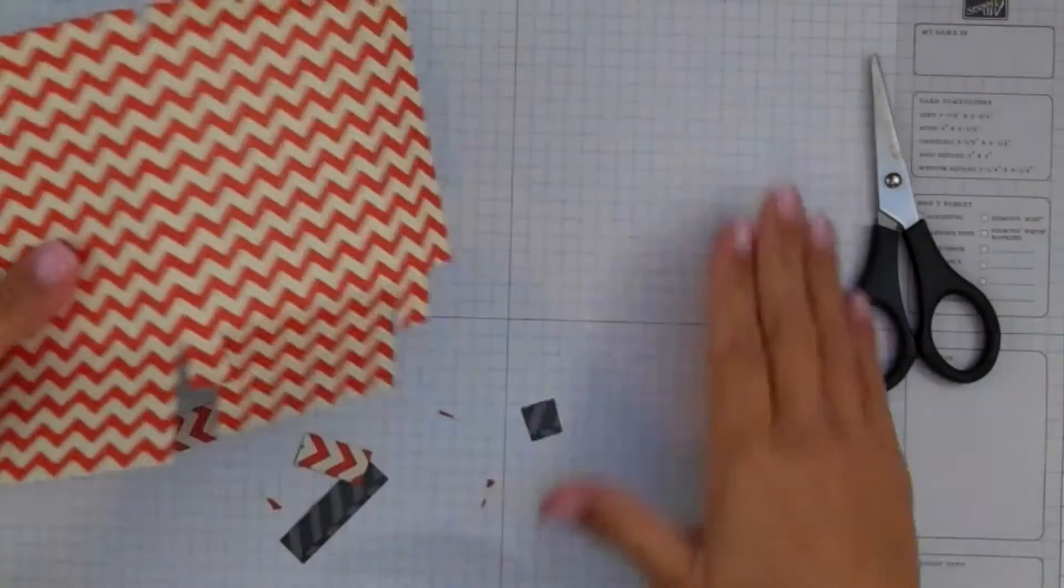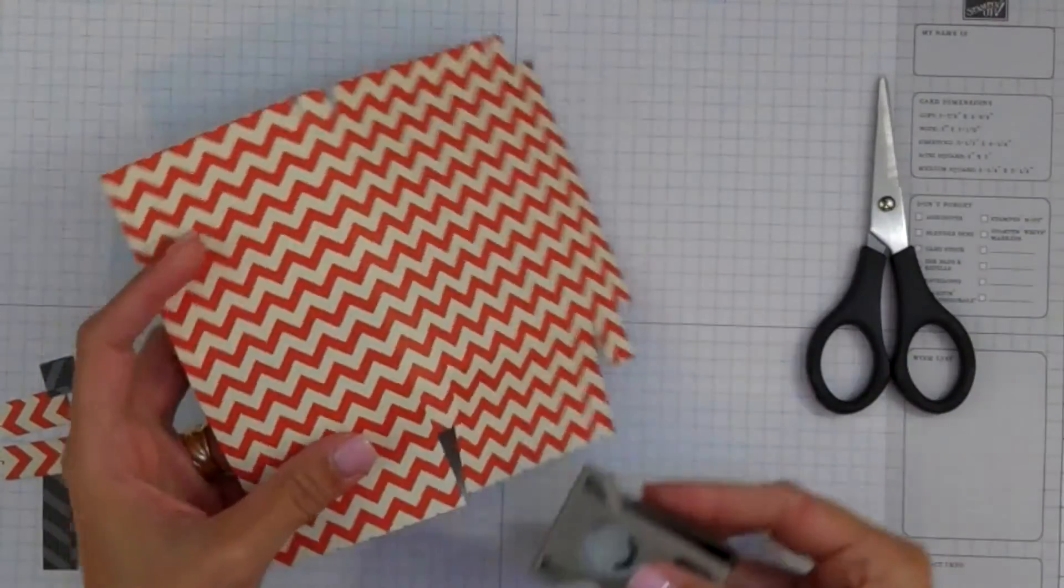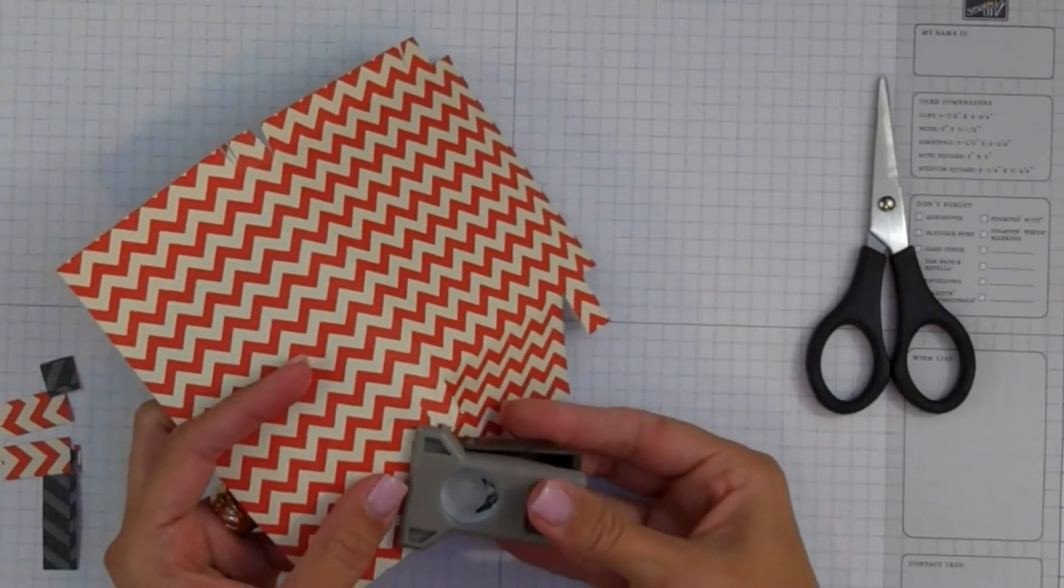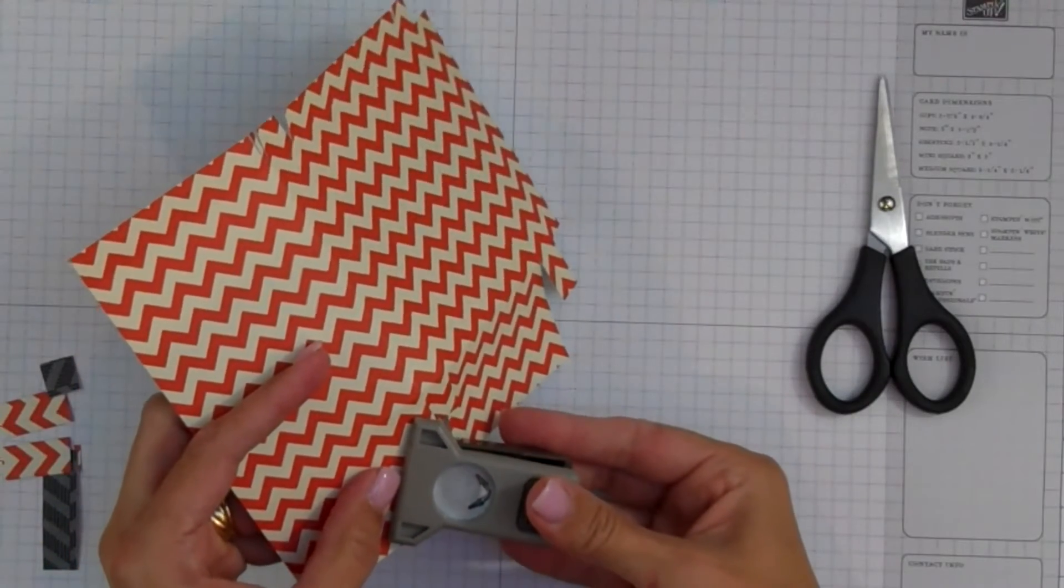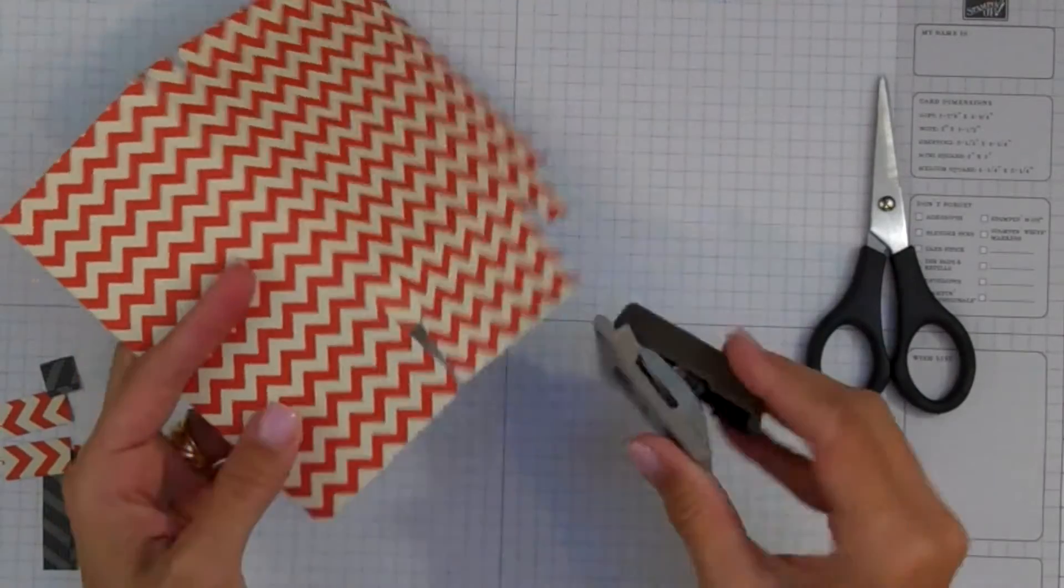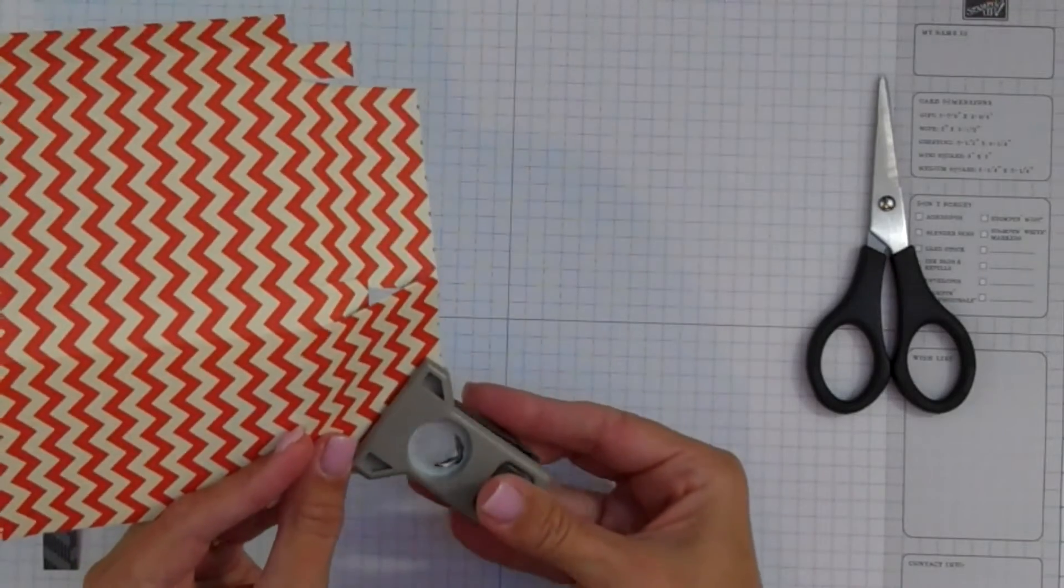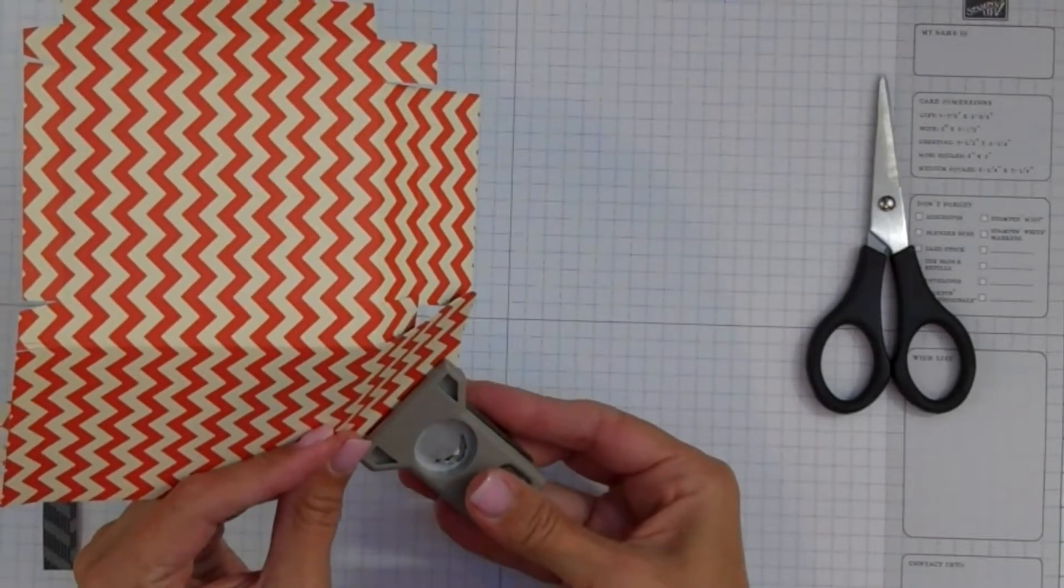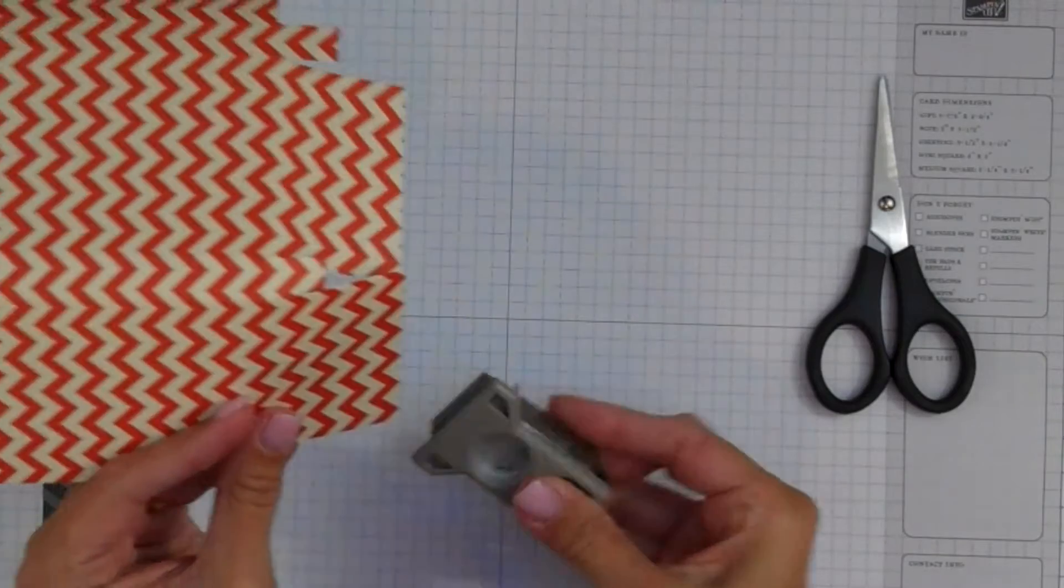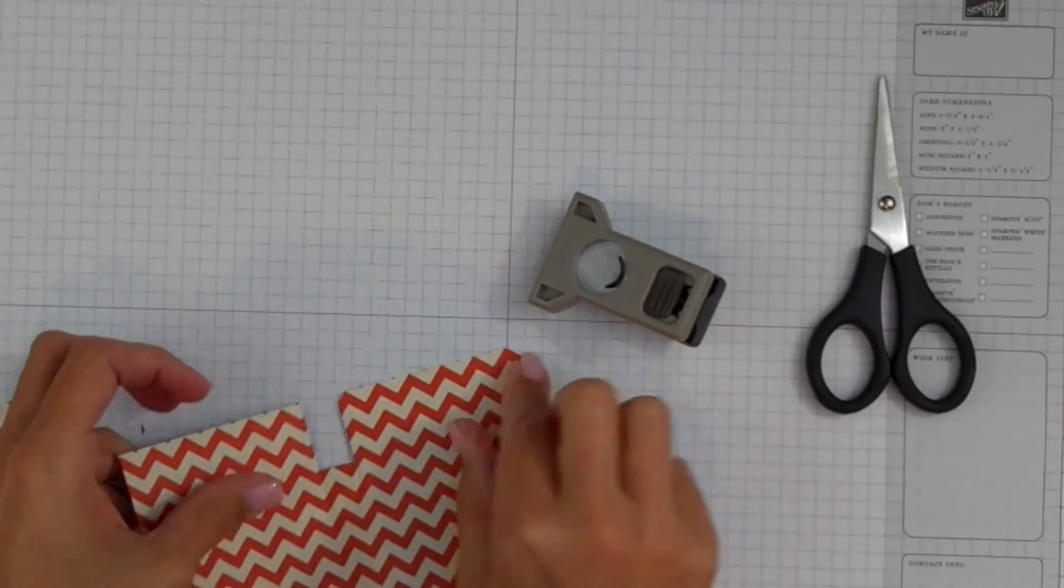Okay, so now I'm ready to finish it up by corner rounding. When I use the corner rounder, I like to use it upside down and make sure that the corner that I'm rounding goes right into the groove that's made for the corner. You can see it there. But there is a little corner that it fits right into. If I put it down, you can see now I've got this corner rounded.